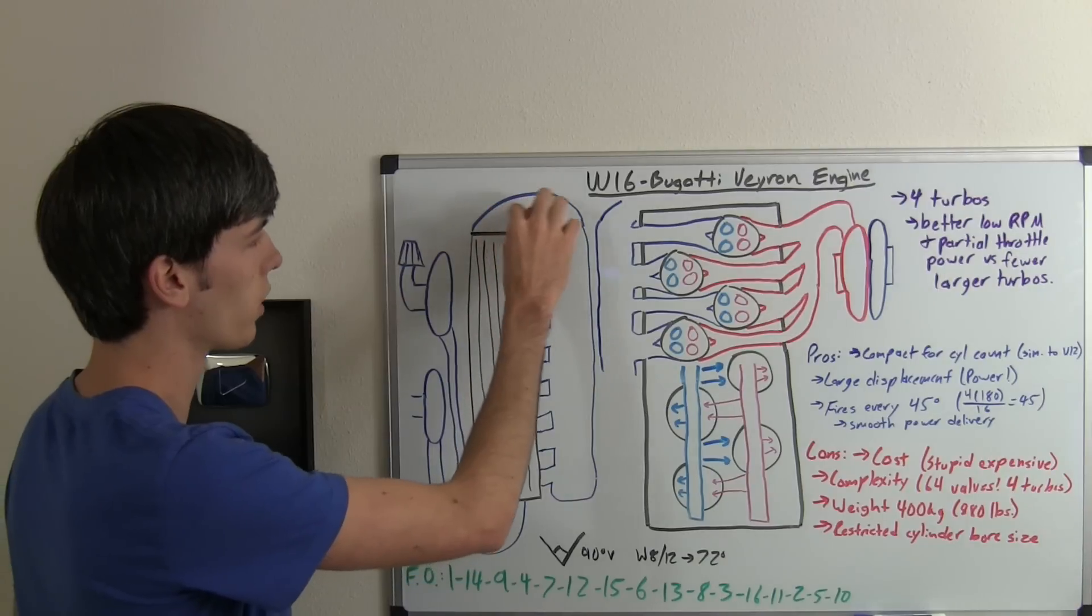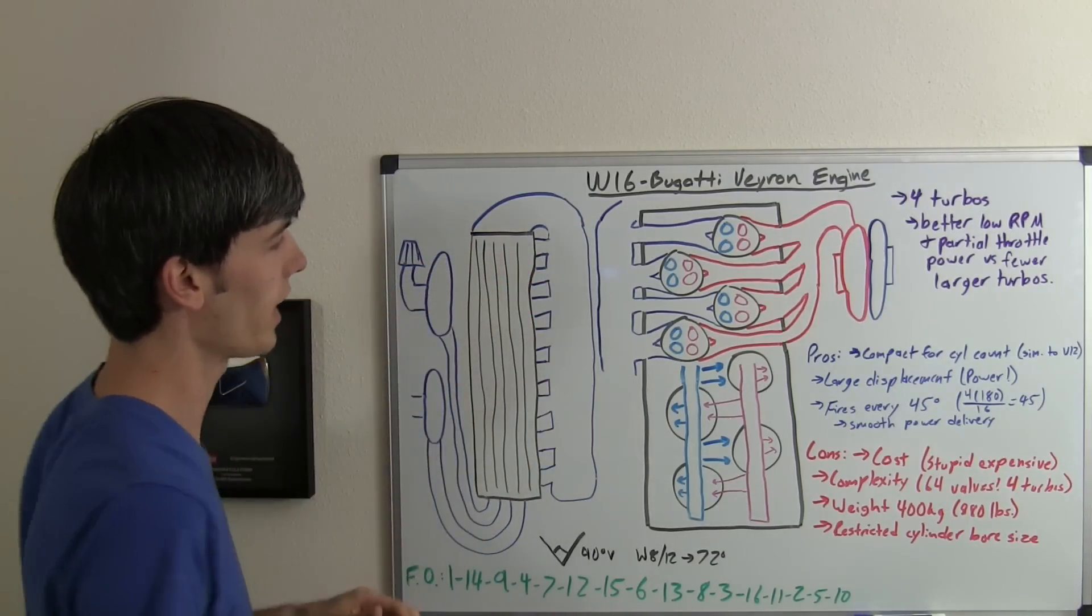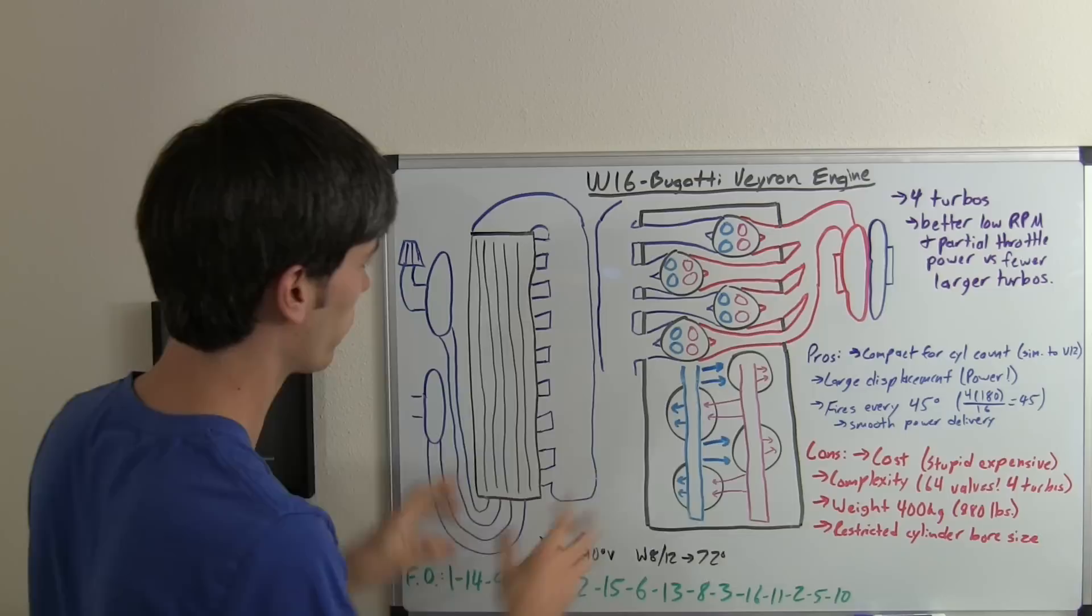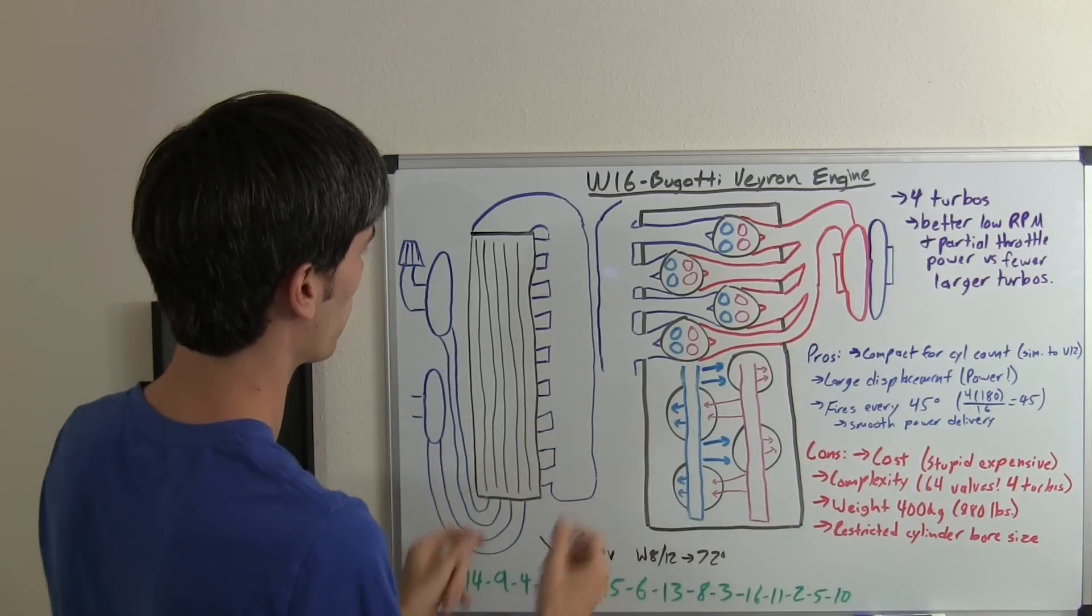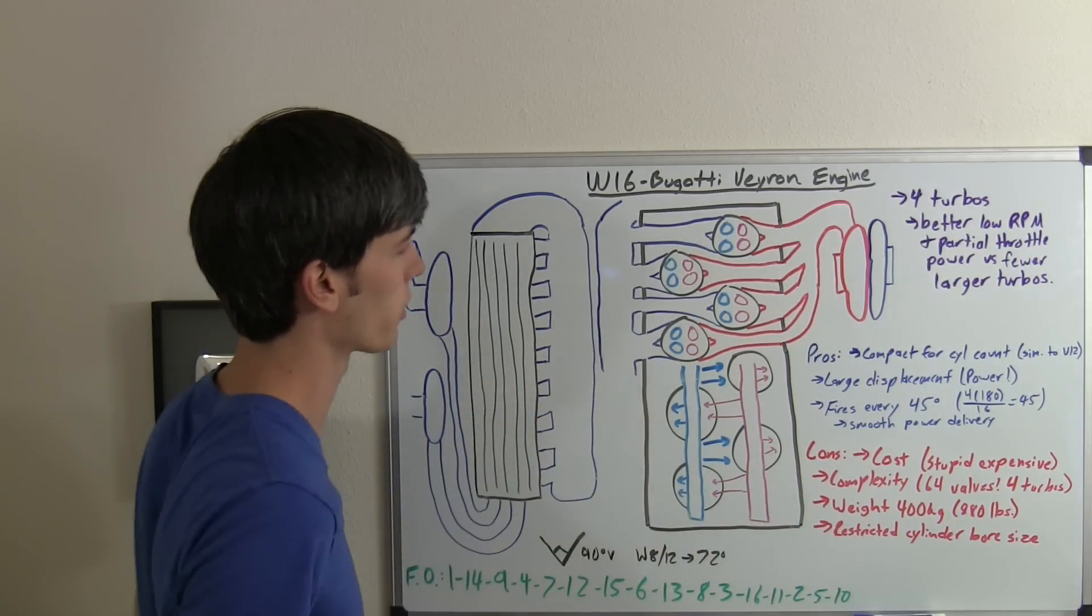So the air passes through the intercooler, comes into the intake manifold, which splits the air into these eight channels for this VR8 on this side and the VR8 on this side. The two turbochargers are basically working for each independent side, which are all connected to a common crank.